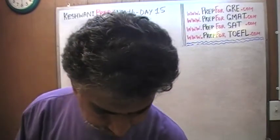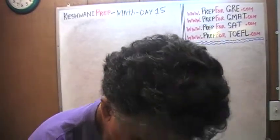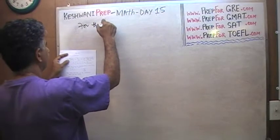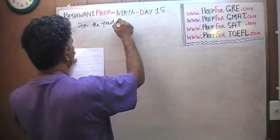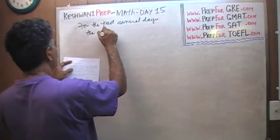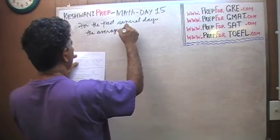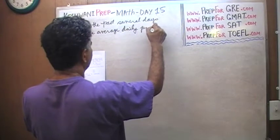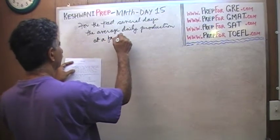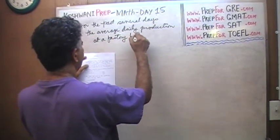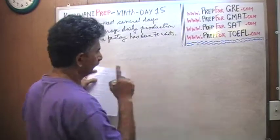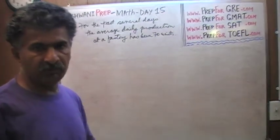Another word problem — not dealing with probability, but a problem dealing with averages for today. Here is the problem: for the past several days, the average daily production at a factory has been 70 units. So for the past several days, on average, the factory has been producing 70 units — 70 widgets, 70 cars, whatever it is that they are making.